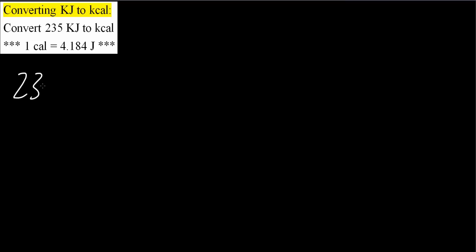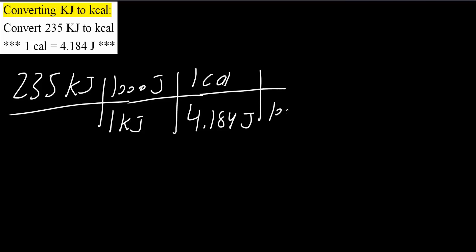So we have 235 kilojoules. We know that one kilojoule is 1000 joules. From here we'll use this conversion - we know that 4.184 joules is one calorie, and that 1000 calories is equal to one kilocalorie.